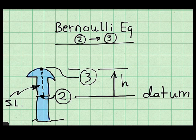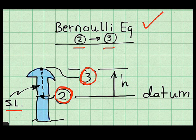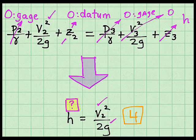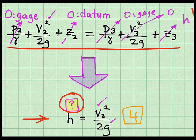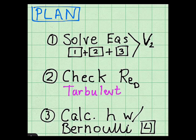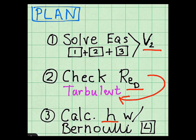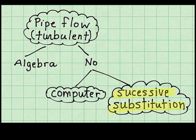To find the height of the fountain, I apply the Bernoulli equation from point 2 to point 3, where point 2 is at the pipe exit and point 3 is the top of the jet. My datum is set at the elevation of point 2, and my goal is height h. After writing the general Bernoulli equation and performing term-by-term analysis, the reduced equation shows that the fountain height can be found once V2 is calculated. My plan is: step 1, solve equations 1, 2, and 3 to calculate V2; step 2, check the Reynolds number to verify turbulent flow; step 3, calculate fountain height h using the Bernoulli equation.